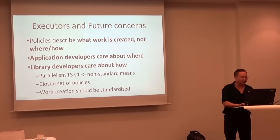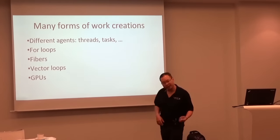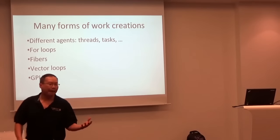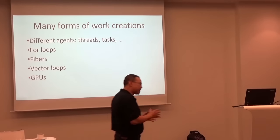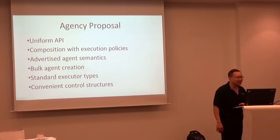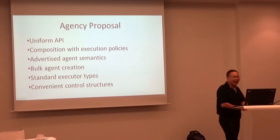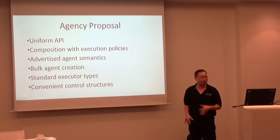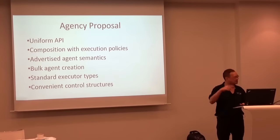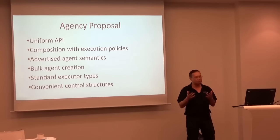In parallelism TS1, the execution policy for par, par_vec, and sequential just describes what work is created — not where and how it's created. Agency fills that gap. Application developers care about where work comes from; library developers care about how it's done. TS1 has a closed set of non-standard policies, and we want work creation itself to be standardized. There are many forms: threads, tasks, blocks, warps, for loops, fibers, vector loops, or GPUs. The Agency proposal has a uniform API composing with existing execution policies, and the key feature is bulk agent creation that allows you to blast out massive parallelism.